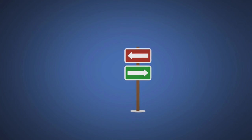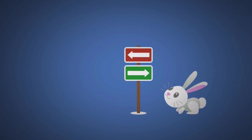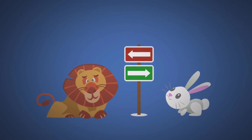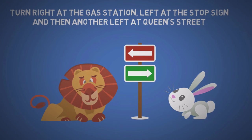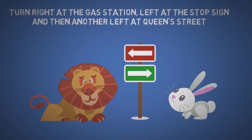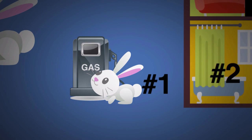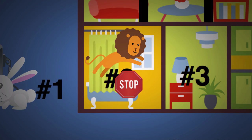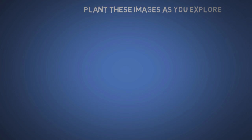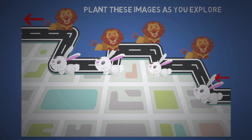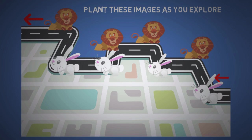Now to remember directions, simply use two images like a rabbit representing right and a lion representing left. So if you had to remember the directions turn right at the gas station, left at the stop sign, and then another left at Queen Street, you can picture in your first room a rabbit hopping around a small gas pump station, then a lion jumping over a stop sign at your second, and then a lion about to attack a queen. These images can also be used as crumb trails or markers, like when you're exploring a new place and want to make sure you can find your way back.